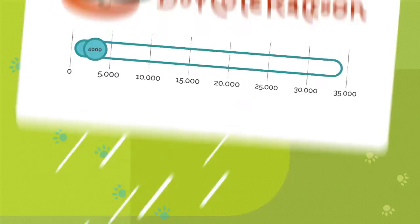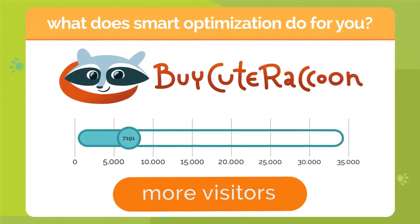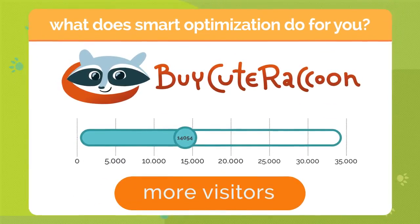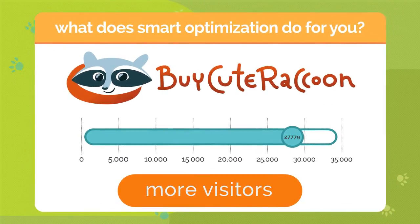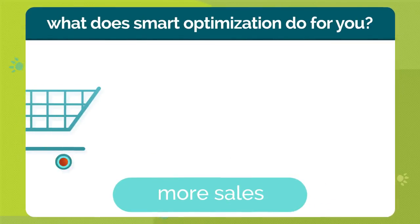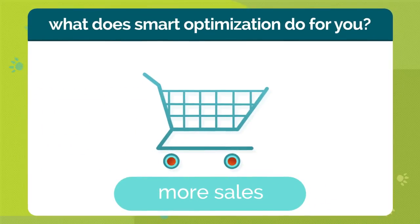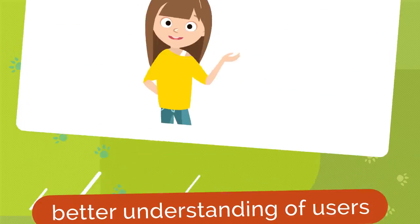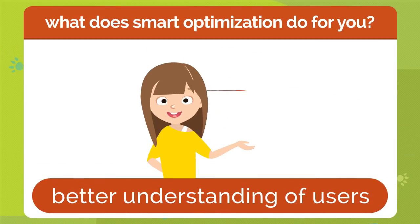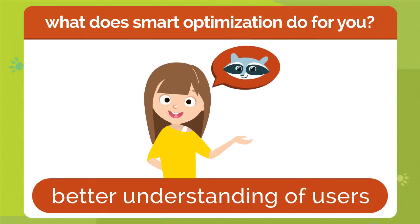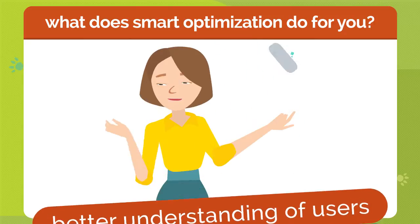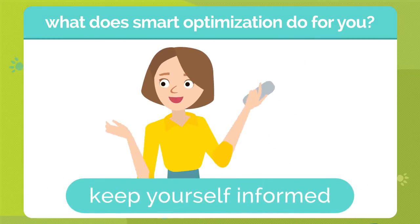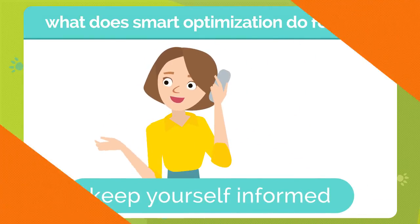As you can see, optimizing your website based on keywords won't just increase organic traffic — it'll also help you bring users to your website who are ready to buy your product. The optimization process will also help you better understand your potential customers, as well as your competitors.